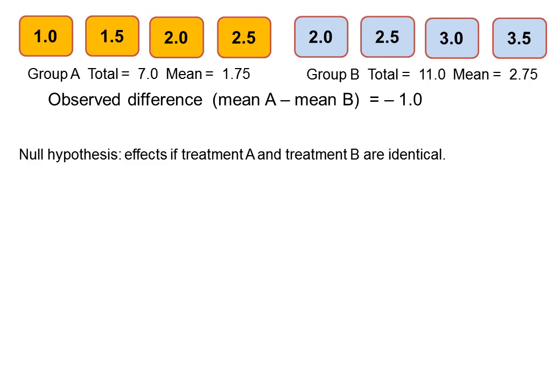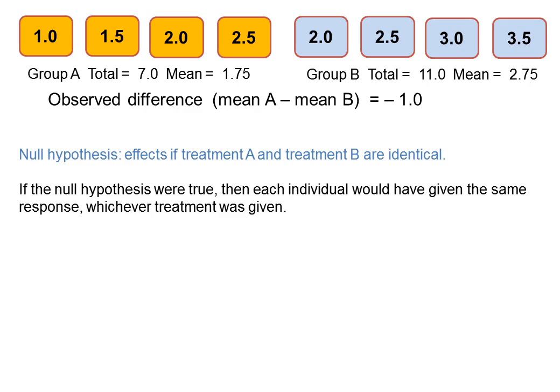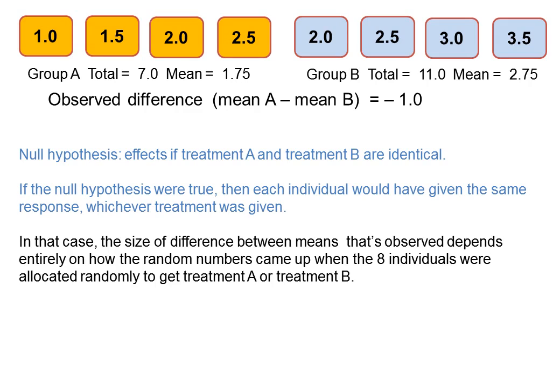We set up a null hypothesis which says that the effects of Treatment A and Treatment B are identical. That's a hypothesis, not an established fact, of course. We notice then that if this null hypothesis were true, then each individual would have given the same response whichever treatment was given. For example, this particular fourth individual would have given the response of 2.5 even if he'd been given Treatment B. If that's the case, then the size of the difference between means which we observed, minus one, must have depended entirely on the way the random numbers came up when the eight individuals were allocated randomly to get Treatment A or Treatment B.